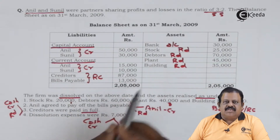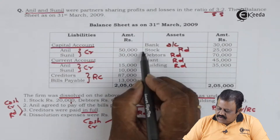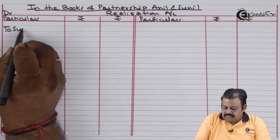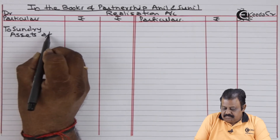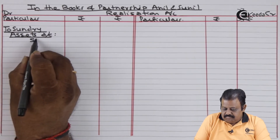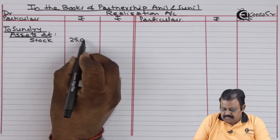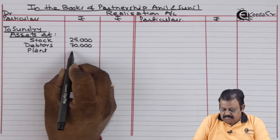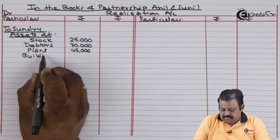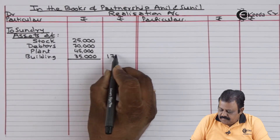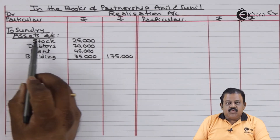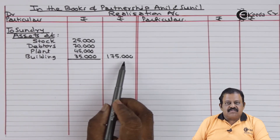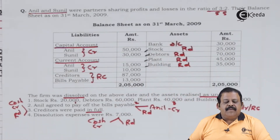Let us start now. The first step in solving the problem is the transfer step, where all items in the balance sheet will be transferred to various accounts. Starting with the asset side: stock, debtors, plant, and building will be transferred to the debit of the realization account. Realization account debit side — to sundry assets: stock, debtors, plant, building at book value — total 1,75,000. Bank — 30,000 — will be recorded to the debit of the bank account.